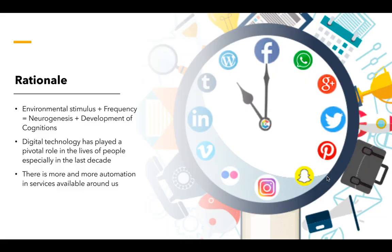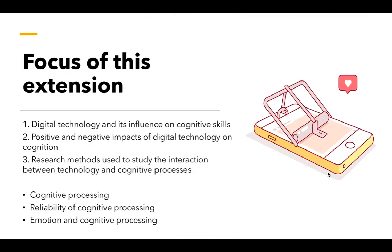The rationale behind increasing research and introducing a chapter on the impact of digital technology is due to the increasing usage of it in our society. More and more services are becoming automated. From our study in the biological approach, we know that the environment plays an integral role in our development, both physiologically and psychologically. The main focus of this unit is to understand the influence — both positive and negative — that digital technology has on cognitive processing, reliability of cognitive processing, and emotions.